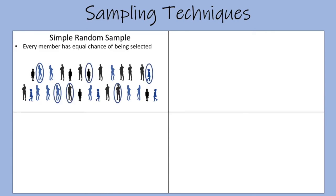One way to do this would be to give each member of the population a number and then use a random number generator for the actual selection.